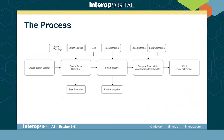The approach is: first create a Batfish session and create the base snapshot. Then create a failure snapshot using fork snapshotting. Once we have both the base and the failure snapshot, we run them through the differential reachability question to output any flows that are not working or differ between the two snapshots.